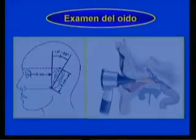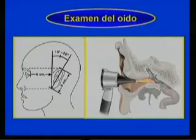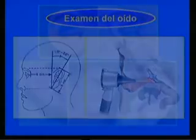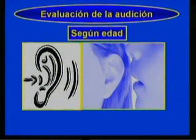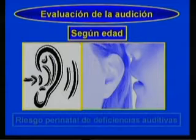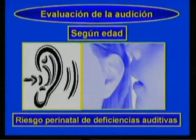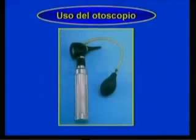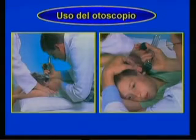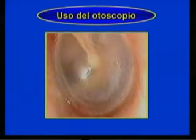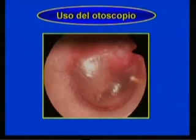En el examen del oído, observarán la posición, forma y características del mismo e identificarán anormalidades. Es importante que conozcan los signos según la edad que indican que un lactante puede oír, así como los problemas perinatales que incrementan el riesgo de deficiencias auditivas. Para el uso del otoscopio, listarán los métodos auxiliares a tener en cuenta para la exploración. Este proceder te permitirá reconocer las características de la membrana timpánica en el niño sano y en el curso de una otitis media aguda.